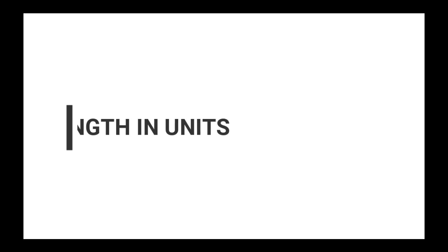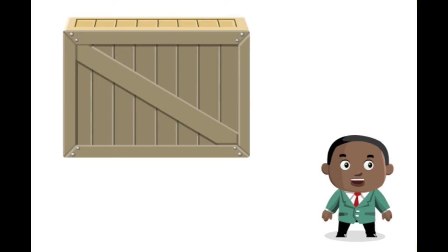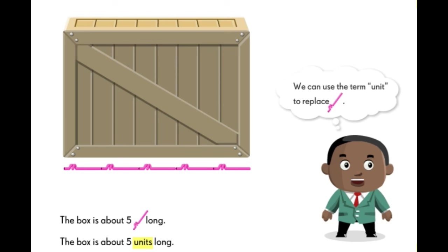And last, finding length in units. Length can be described using the term unit instead of paper clips or ice cream sticks. For example, let's see the next video. Let's use straws to measure the length of this box. One, two, three, four, five. The box is about five straws long. We can also say the box is about five units long. We can use the term unit to replace straws — one straw equals one unit.